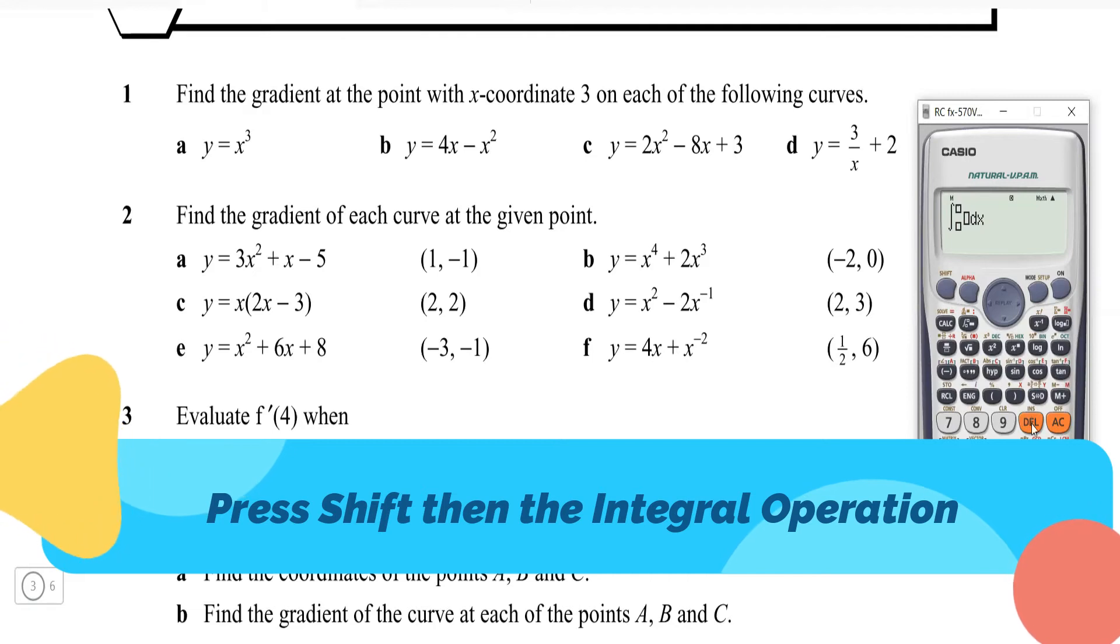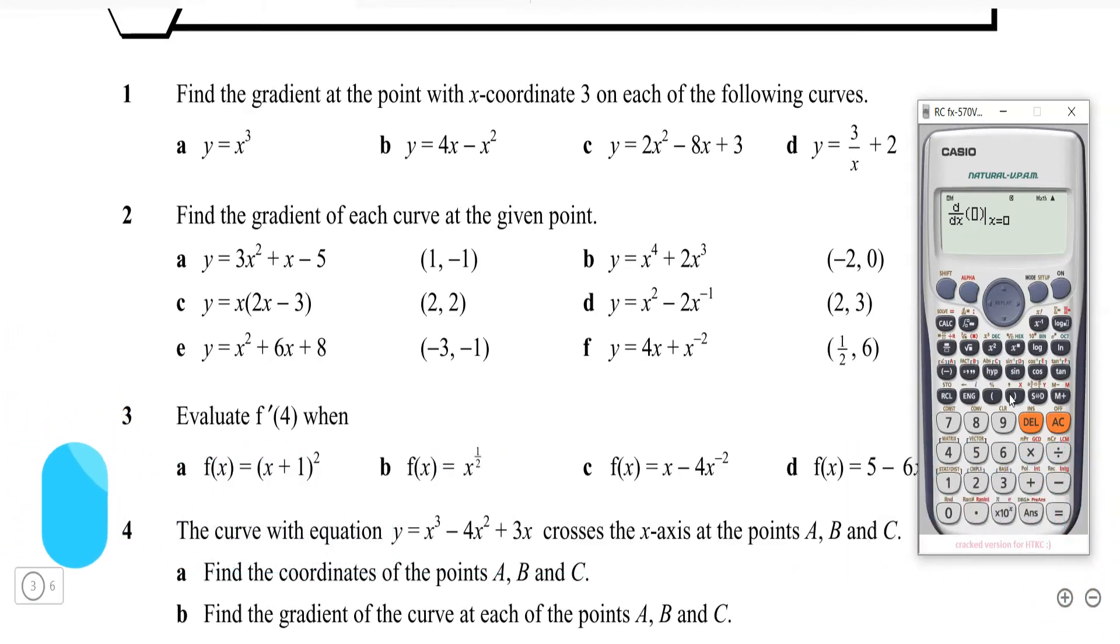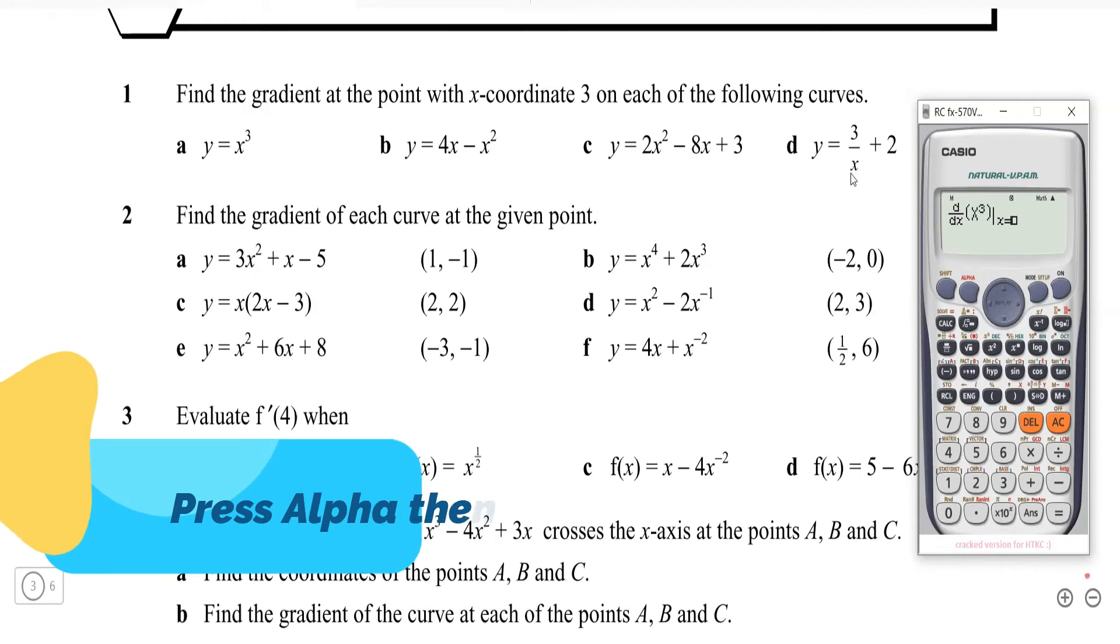This is going to give you integration, so you're going to press shift then press it, so it's going to give you d by dx of the function. To get x cubed you press alpha, x to the third power, and then you need the gradient where x is equal to 3.